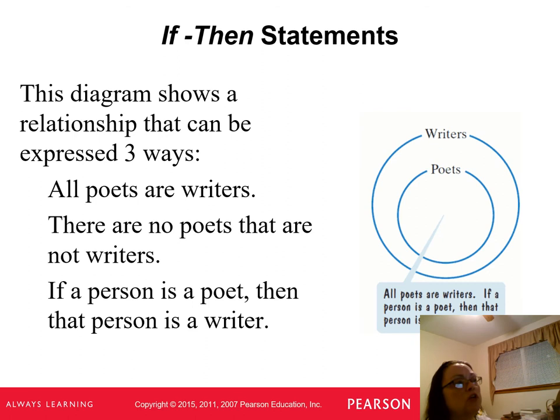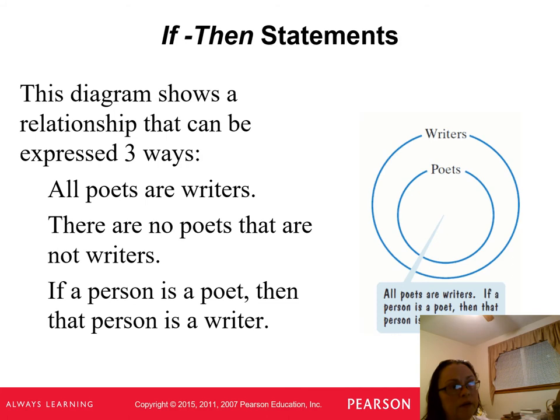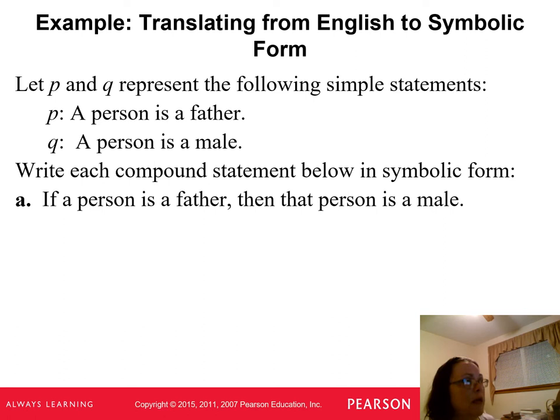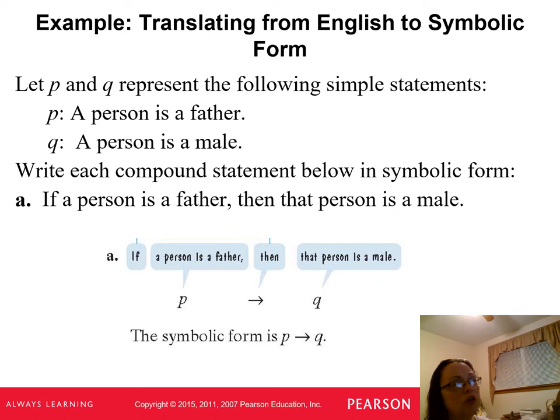This diagram shows a relationship that can be expressed three ways: 'all poets are writers,' 'there are no poets that are not writers,' and 'if a person is a poet, then that person is a writer.' We're connecting this to our Venn diagram. Let P be 'a person is a father' and Q be 'a person is male.' Then 'if a person is a father, then that person is male' is written P → Q. That arrow means 'implies.'